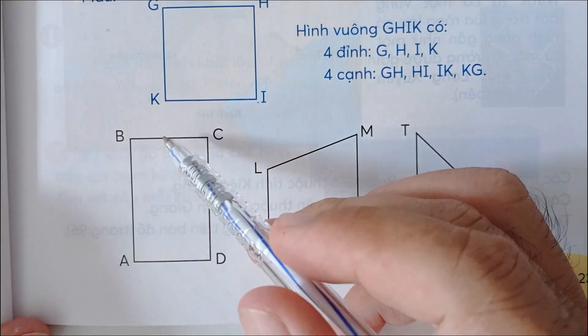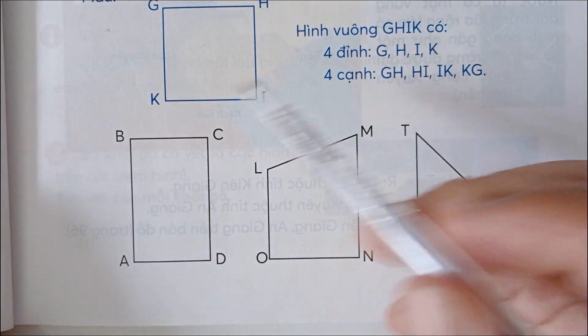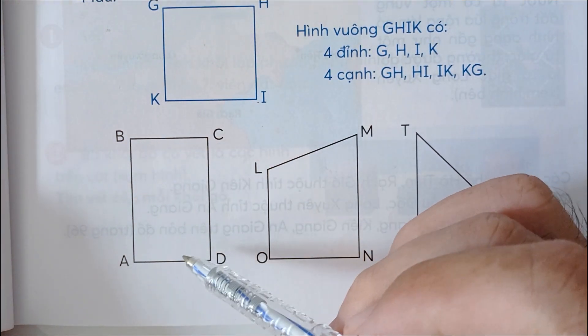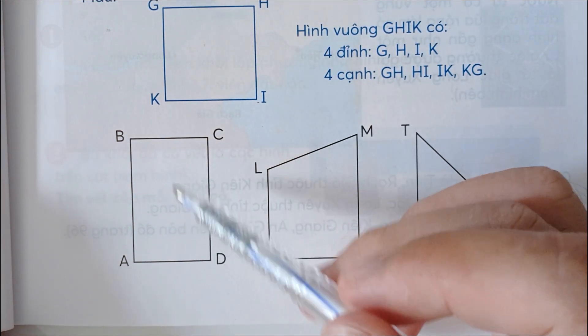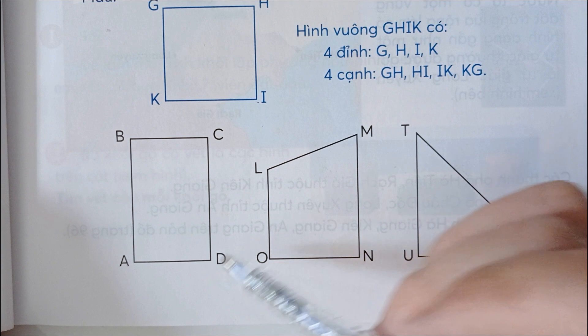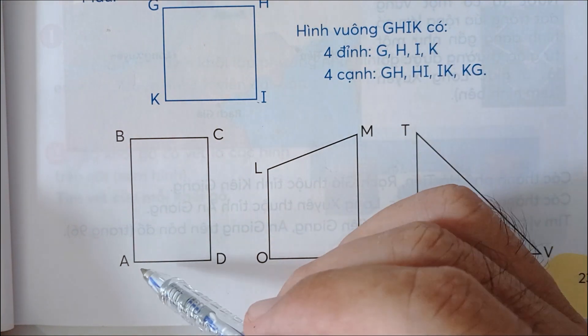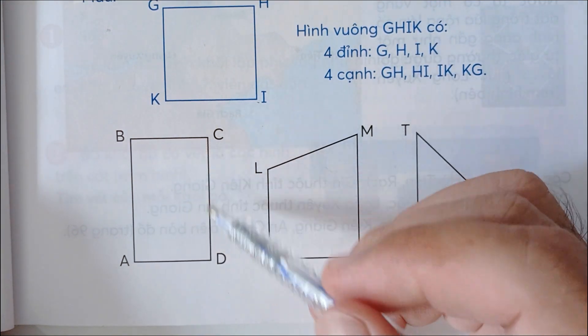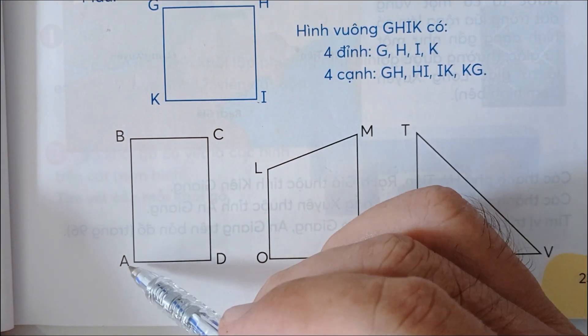Hình chữ nhật A, B, C, D có 4 đỉnh là A, B, C, D. Có 4 cạnh là AB, BC, CD và DA.